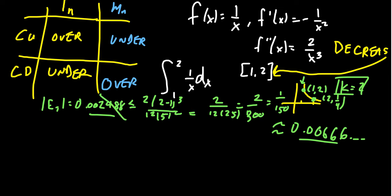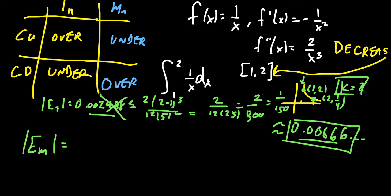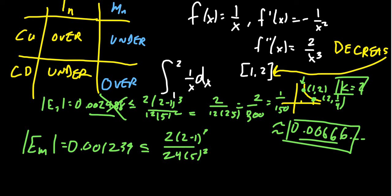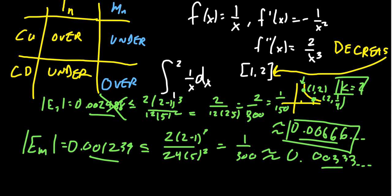If we do the same for the midpoint rule, our computed error was 0.001239. The error bound gives 2 times (2 minus 1) cubed over 24 times 5 squared, which is just half of what we had before: 1/300, approximately 0.00333. Our actual error is again about a third of this bound. Because the midpoint error bound is half the trapezoidal error bound, we anticipate that on average the midpoint rule is doing much better than the trapezoidal rule.